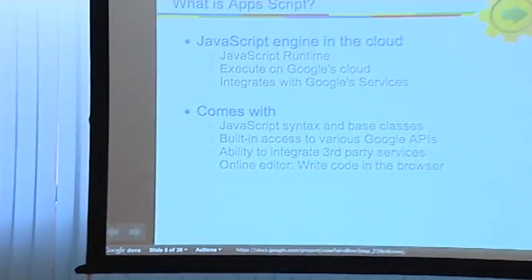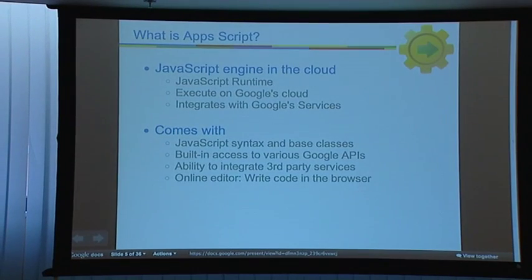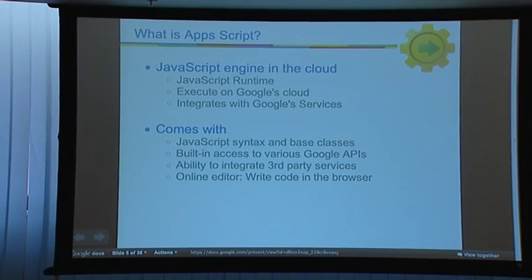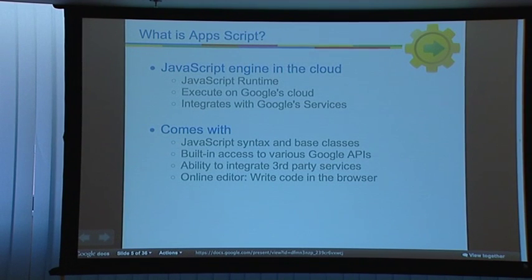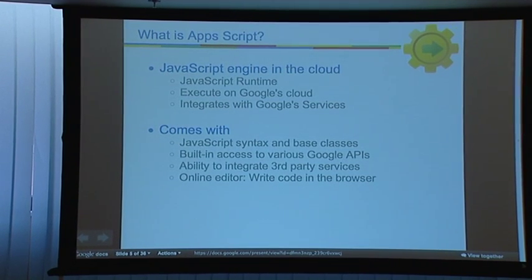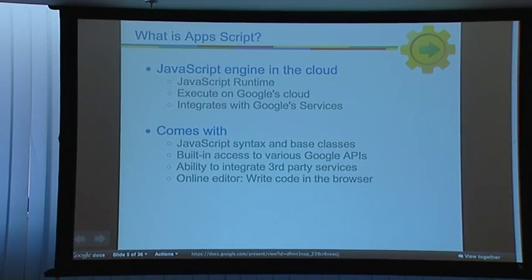What is Apps Script in general? Apps Script is basically a JavaScript runtime in the cloud. We execute your JavaScript code in Google's cloud — it's not running on your web page. It has a really tight integration with Google's services, as you'll see in all the demos. Since it's JavaScript syntax, you can do all the basic stuff you do with JavaScript. Since it doesn't run inside your web page, you don't have access to the DOM.